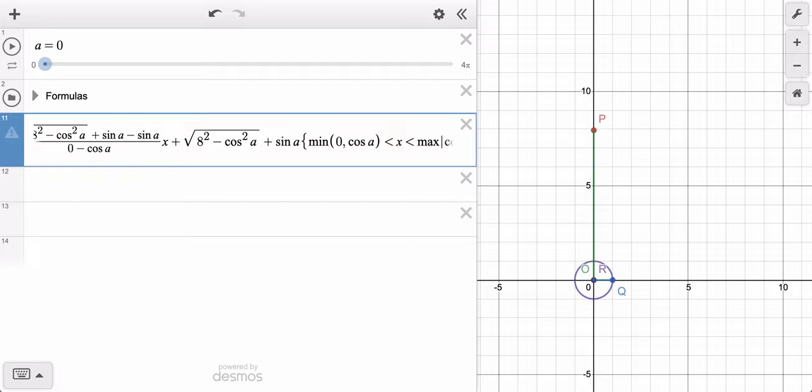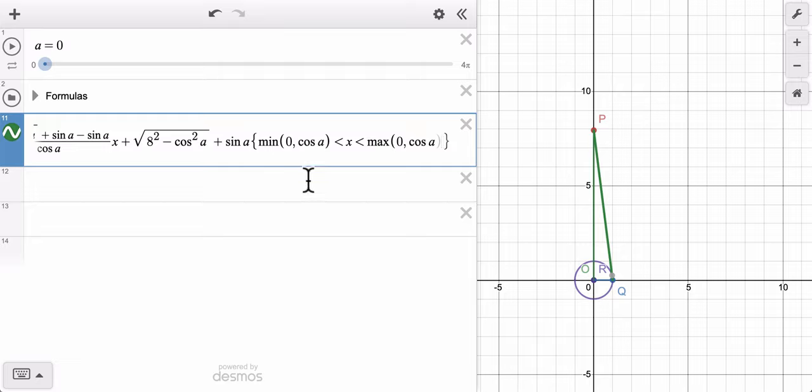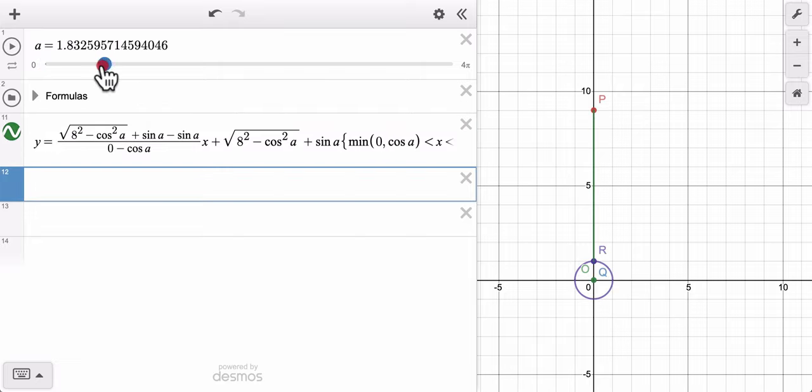And then go up to whatever is bigger. Type in our max function. What's it going to be bigger? 0 or the cosine of A. And what this will do is it will redefine the domain based on whether Q is smaller or bigger than, when the x position of Q is smaller than or bigger than the x position of P. Isn't that really cool?